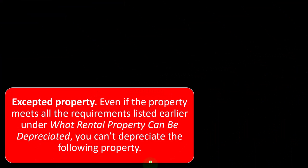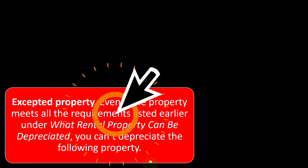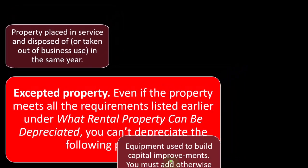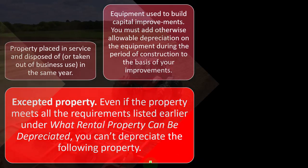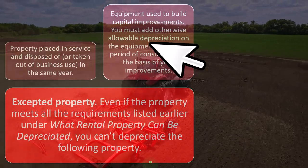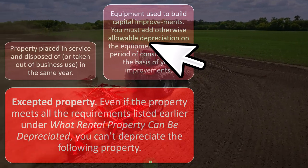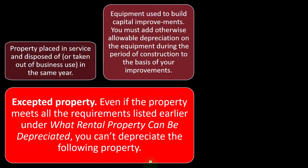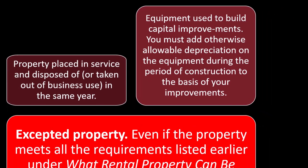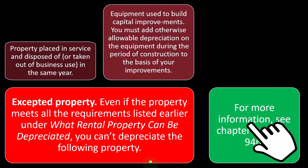Even if property meets all the earlier requirements, certain accepted property still can't be depreciated: property placed in service and disposed of or taken out of business use in the same year — which would be an unusual situation — and equipment used to build capital improvements, where otherwise allowable depreciation during the construction period must be added to the basis of the improvements rather than deducted. For more information, see chapter one of Publication 946.